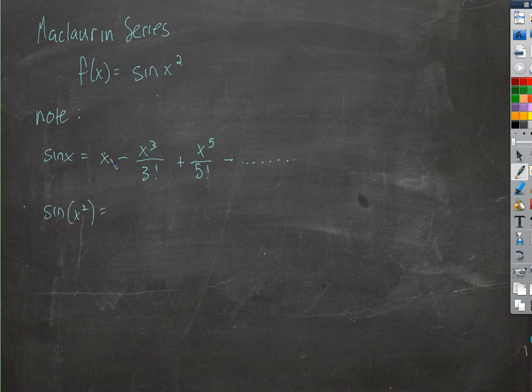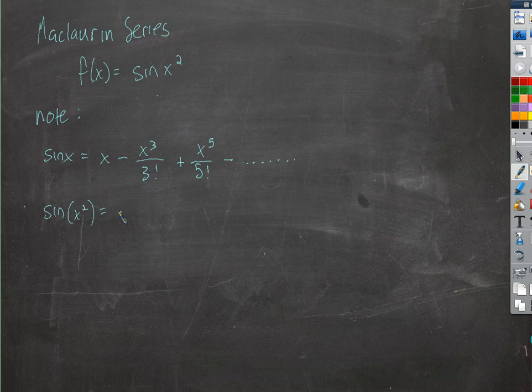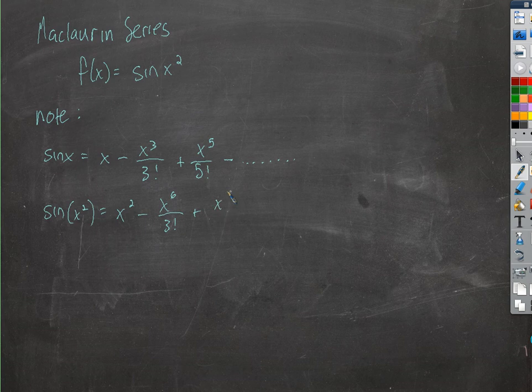is just, wherever you see an x, it's an x squared now. So x squared minus x to the 6th over 3 factorial, plus x to the 10th over 5 factorial, and so on.